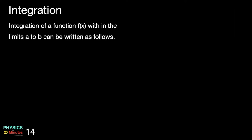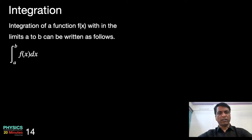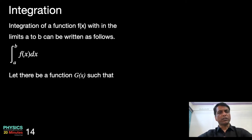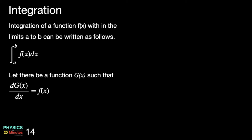Therefore, the integration of a function f(x) within the limits a to b can be written as the integral from a to b of f(x) dx. This gives the total area under the curve f(x) and the x axis, bounded by the two limits a and b. Let there be another function g(x) such that f(x) is the derivative of g(x), that is dg/dx = f(x). If this is true, then the integral of f(x) dx from a to b can be written as g(b) − g(a).